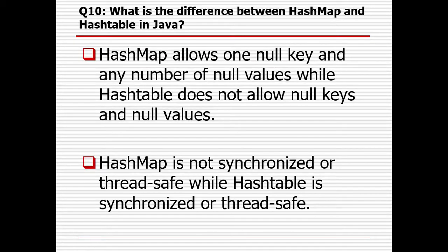What is the difference between HashMap and HashTable in Java? HashMap allows one null key and any number of null values, while HashTable does not allow null values or null keys. HashMap is not synchronized or thread-safe, while HashTable is synchronized or thread-safe. That is the basic difference between them.